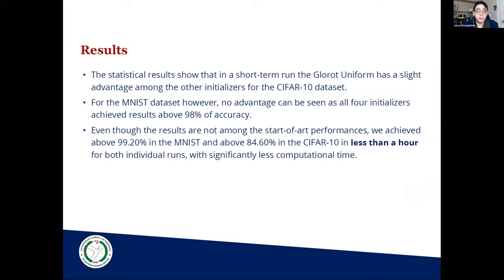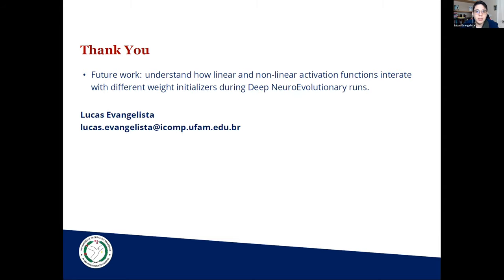We had between 25 to 30 minutes for the evolutionary run, and after finding the best individual we trained it for 100 epochs, making the total process less than an hour. We achieved almost 85% for CIFAR-10 and more than 99% on MNIST. We found a slight advantage for Glorot uniform on CIFAR-10. For MNIST, we found no meaningful advantage between the initializers, as every initializer in every run got above 98%. For future work, we are now trying to understand how linear and non-linear activation functions interact with different weight initializers during a deep neural evolutionary run. Thank you very much — I'm open for questions.